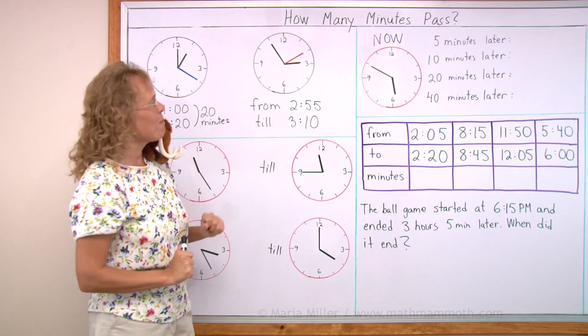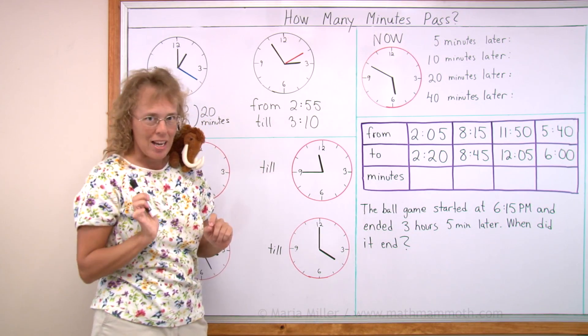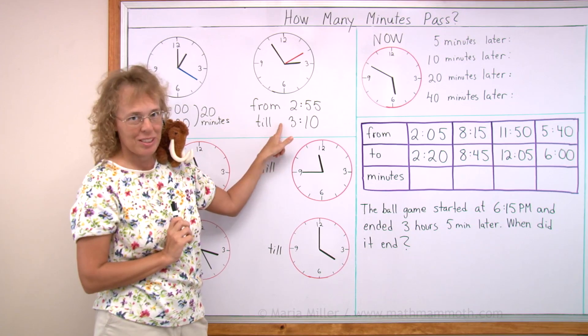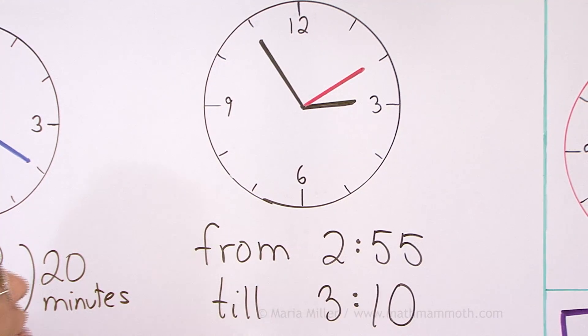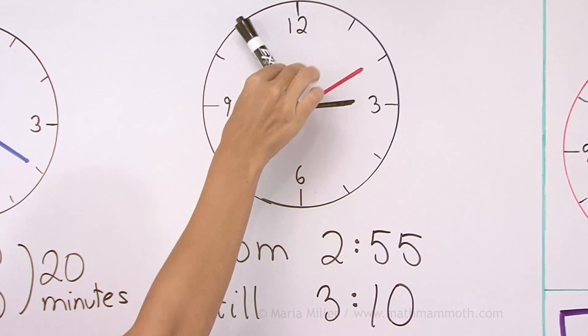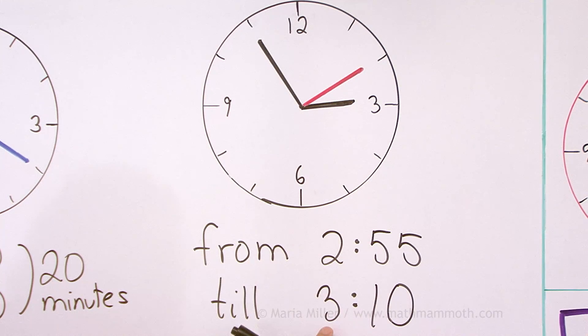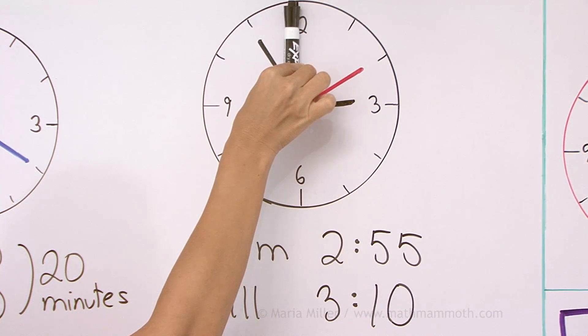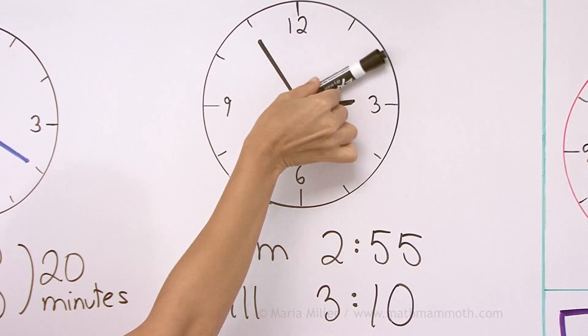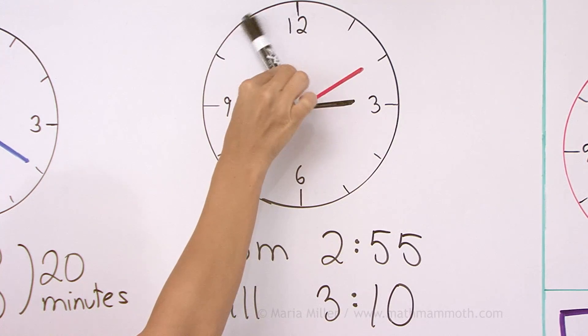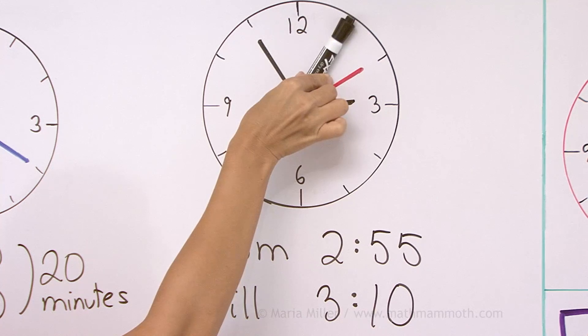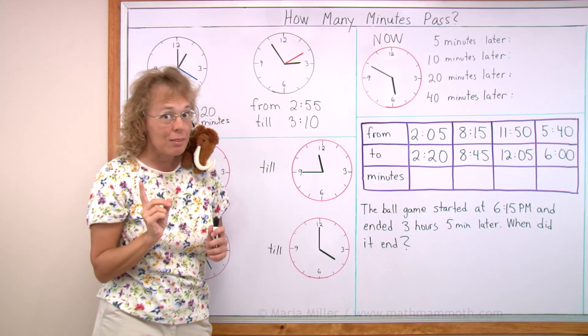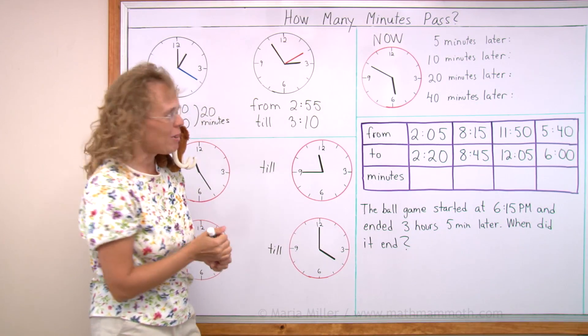This one is a little trickier. How many minutes pass between these two times? 2:55 is when the minute hand is here. And then 3:10, okay, it will travel first here. It would be 3 o'clock. And then here and here. So from here to here is 5 minutes, and then 10 minutes, right? So we get 15 minutes.